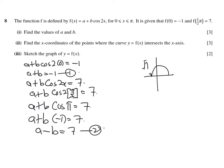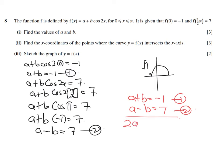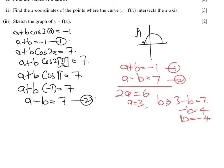Rewriting the two equations: equation 1 is a + b = negative 1, and equation 2 is a − b = positive 7. Adding equations 1 and 2 eliminates b, giving 2a = 6, so a = 3. Substituting back gives b = negative 4. Therefore a = 3 and b = negative 4.